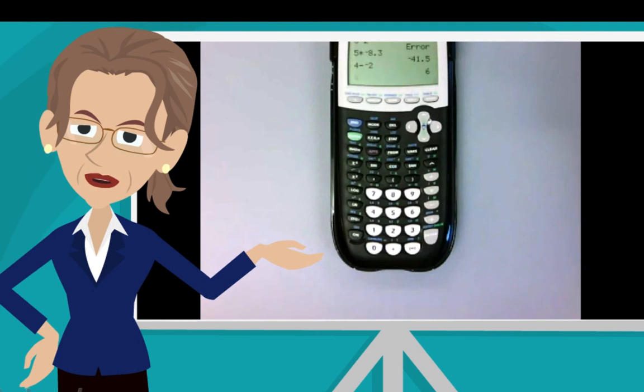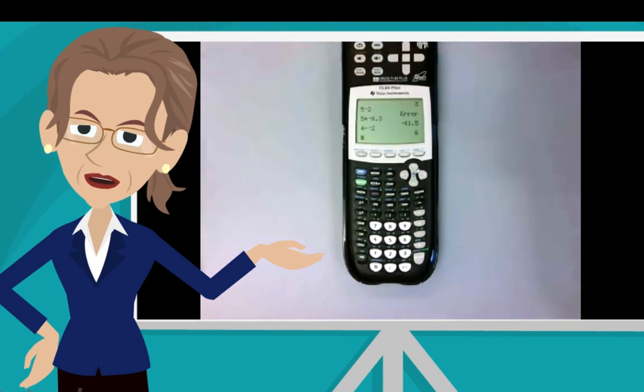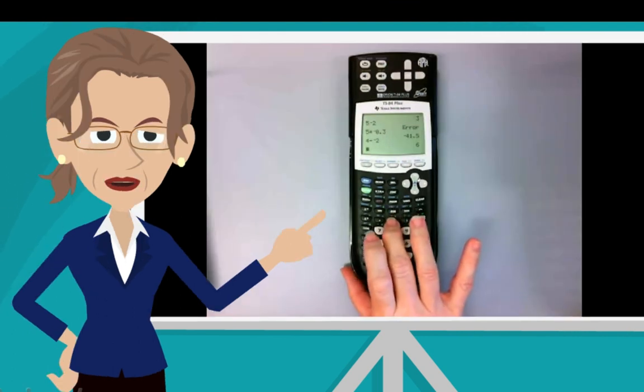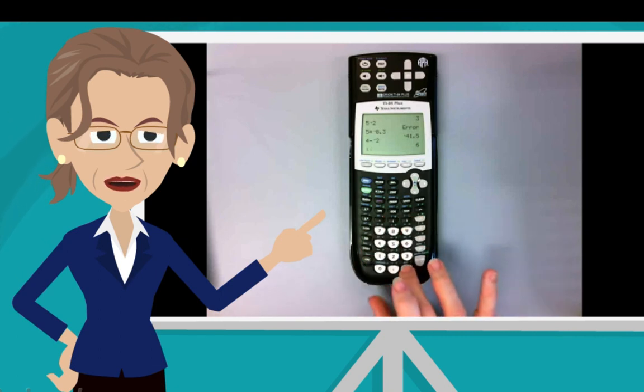Now let's practice parentheses. Suppose we want to enter negative 10 in parentheses. Here's what you press. Open parentheses. Remember, that's above the 8. Now the negative symbol. Minus.